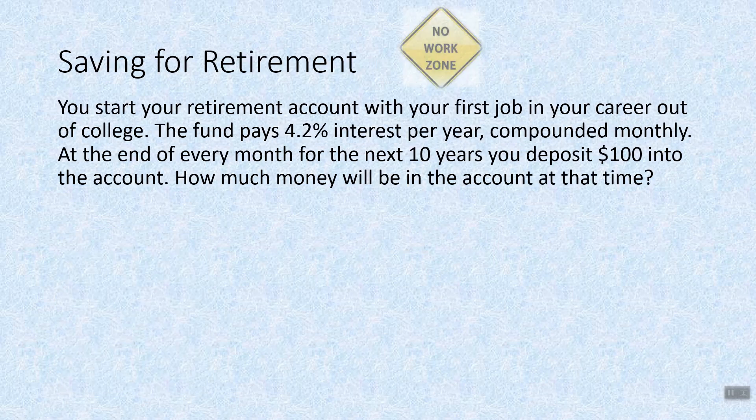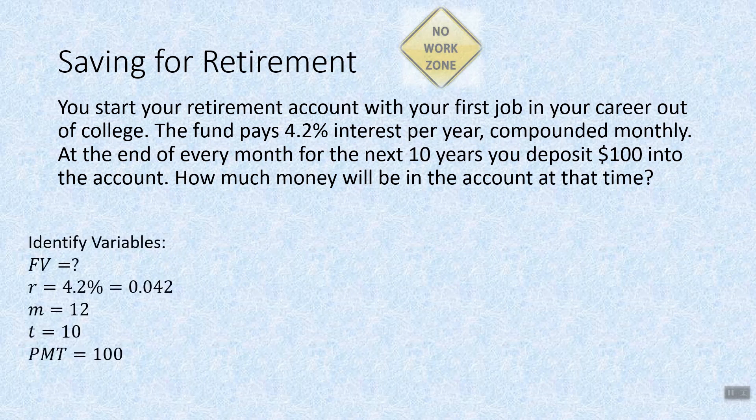Saving for retirement: you start your retirement account with your first job out of college. The fund pays 4.2% interest per year, compounded monthly. At the end of every month for the next 10 years, you deposit $100 into the account. How much money will be in the account at that time?